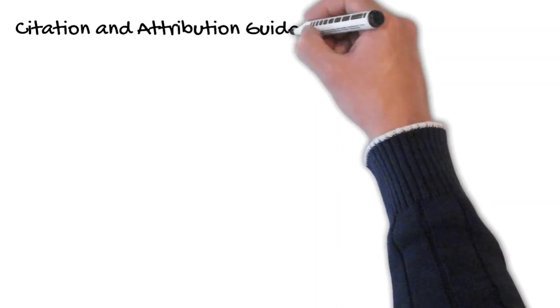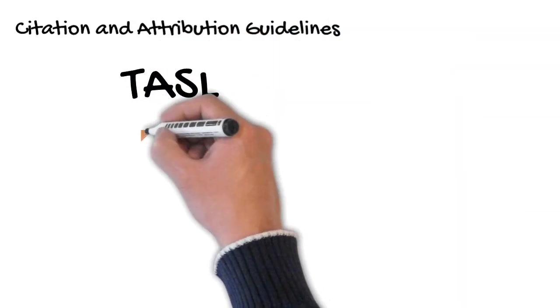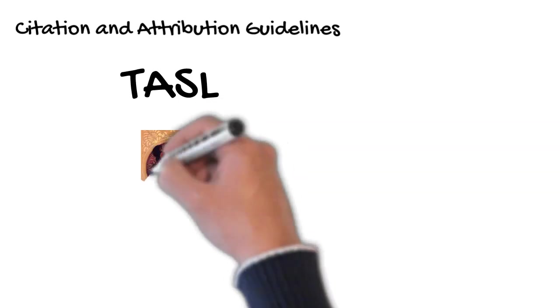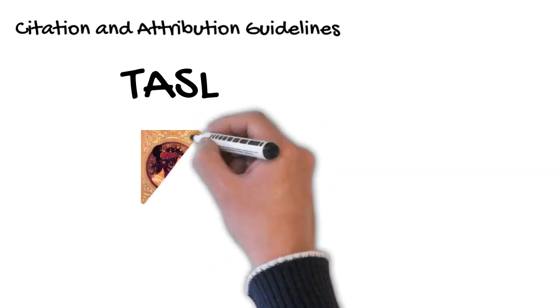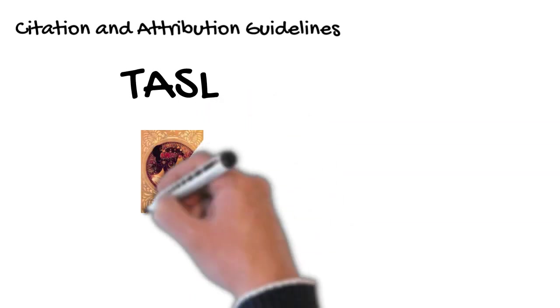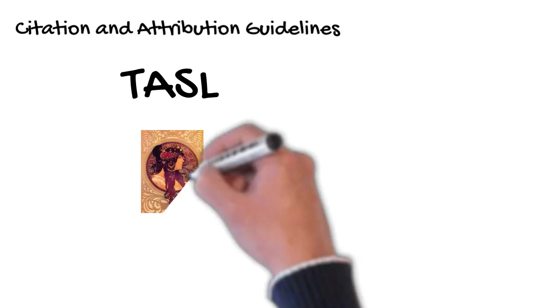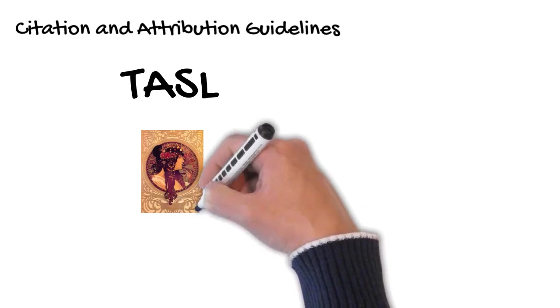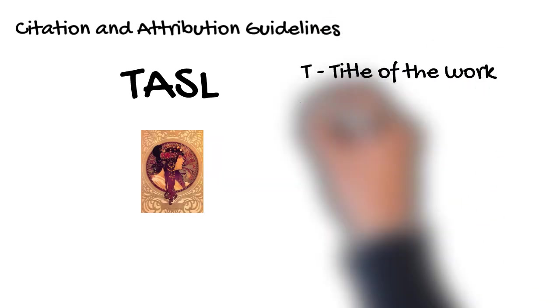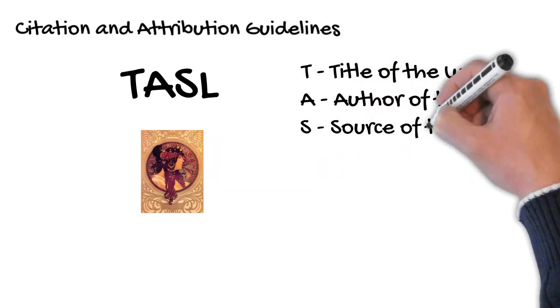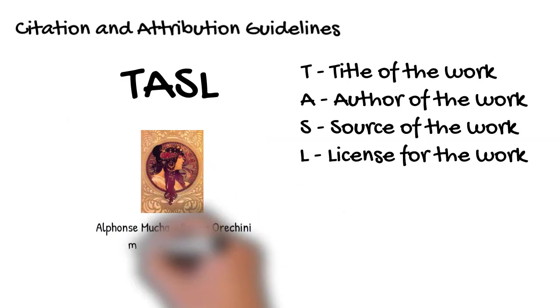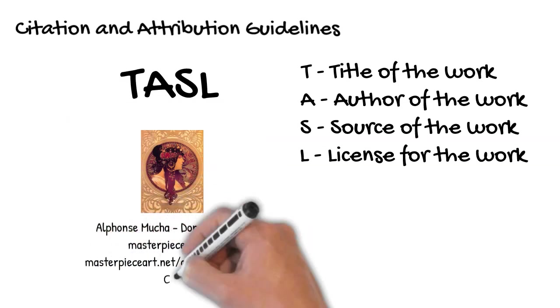What information should you include when citing a Creative Commons work? The acronym TASSEL covers the core information you should include. The goal is to make sure that anyone who wants to track down the original themselves has all the information they need to do that. TASSEL stands for T - Title, A - Author, S - Source, and L for License Type. Include all of these and you're in great shape.